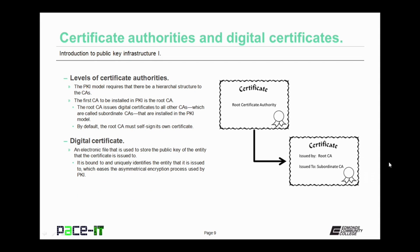There are different levels of certificate authorities. The PKI model requires that there be a hierarchical structure to the certificate authorities. The first CA to be installed in PKI is the root certificate authority. The root CA issues digital certificates to all other CAs that are installed in the PKI model. These additional certificate authorities are called subordinate CAs. By default, the root CA must self-sign its own certificate. Digital certificates are an electronic file that is used to store the public key of the entity that the certificate is issued to. The digital certificate is bound to and uniquely identifies the entity that it is issued to, which eases the asymmetrical encryption process used by PKI.